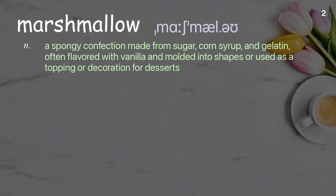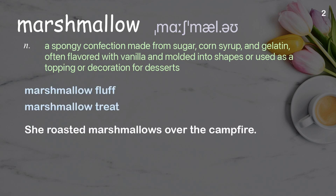Marshmallow: a spongy confection made from sugar, corn syrup, and gelatin, often flavored with vanilla and molded into shapes, or used as a topping or decoration for desserts. Examples: marshmallow fluff, marshmallow treat. She roasted marshmallows over the campfire.